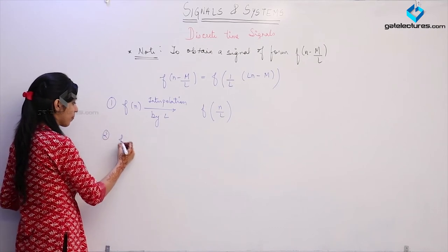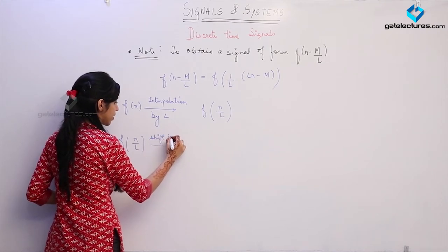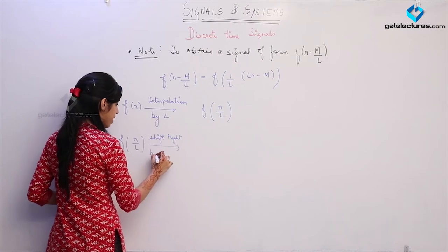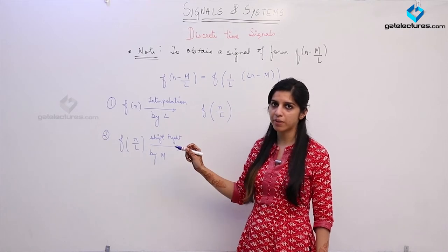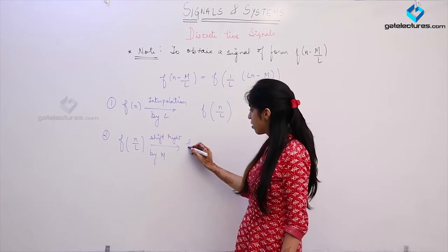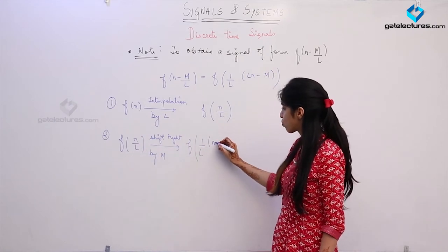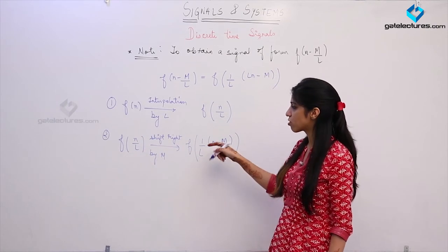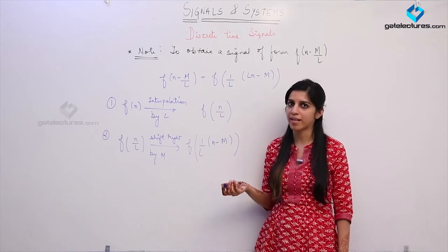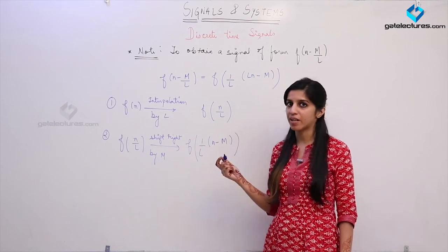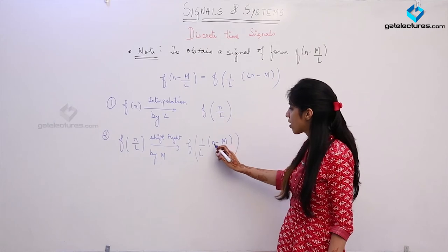Next, I am performing a right shift by m. We have already discussed that whenever you perform any shifting or scaling operation, it does not apply to the complete argument — it applies only to the independent variable n. So performing a right shift by m applies only to n, and it is going to become n minus m. This is not going to become n/l minus m, because the shifting applies only to the independent variable, not the complete argument.